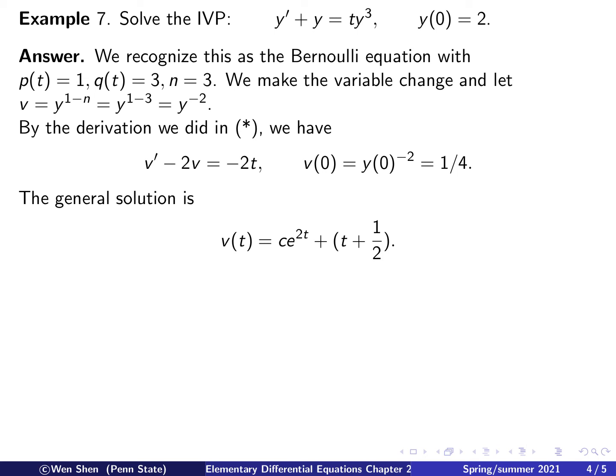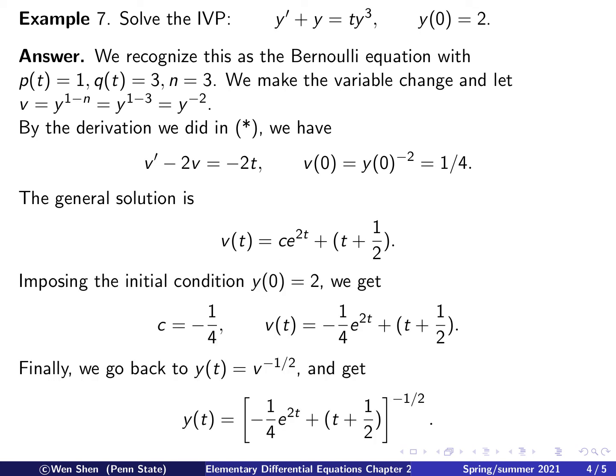So this is actually, even with the constant coefficient here, it's easy to find out the general solution by using the integrating factor, and this is the general solution if you carry out that procedure. So v(t) is c times e to the power 2t plus t plus half. Here, the c is an arbitrary constant. Now we can find the c value by using the initial condition, which we calculated here. So v(0) would be c plus a half, and that shall be one-fourth, and this gives you the value c is negative one-fourth. And put that back in, we have the solution for v.